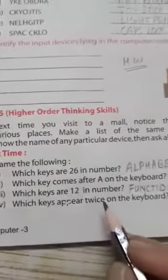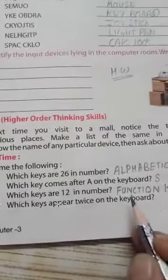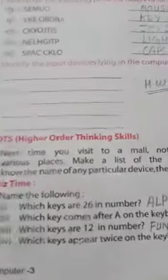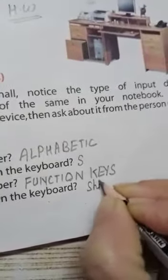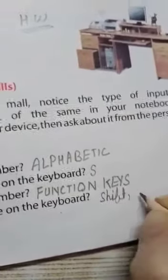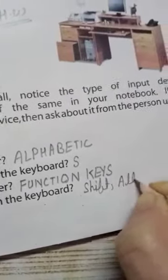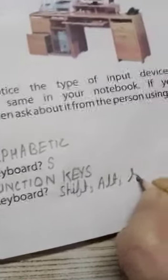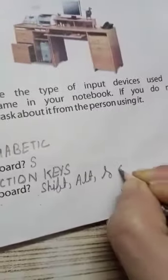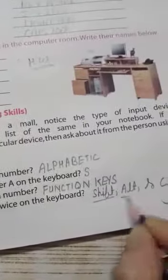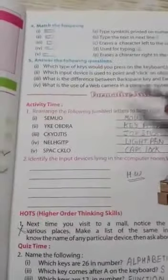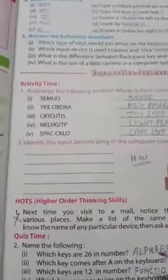Which keys appear twice on the keyboard? Which key appears two times on the keyboard? Those are: the Shift key, which appears twice; the Alt key, which also appears twice; and the Control key, which also appears twice. These three keys appear twice on the keyboard. Children, this is your exercise — you have to complete it today.